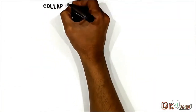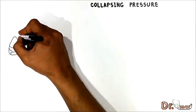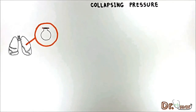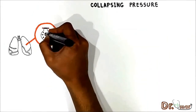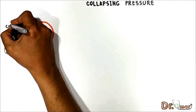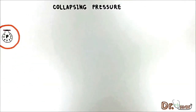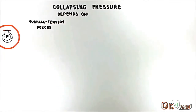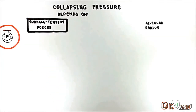Now let's talk about the collapsing pressure created by surface tension forces in more detail. If the air passages leading from the alveoli are blocked, the surface tension force tends to collapse the alveolus, creating a positive pressure attempting to push air out. This pressure is called the collapsing pressure. The amount of pressure generated in the alveolus is dependent on two things: the magnitude of surface tension forces and the alveolar radius. Let's see how collapsing pressure depends on the magnitude of surface tension forces.